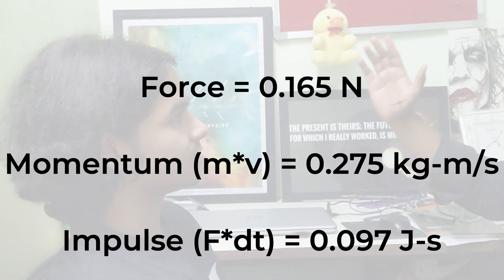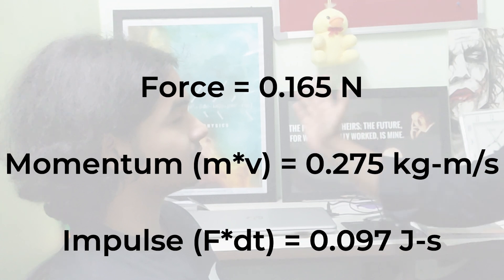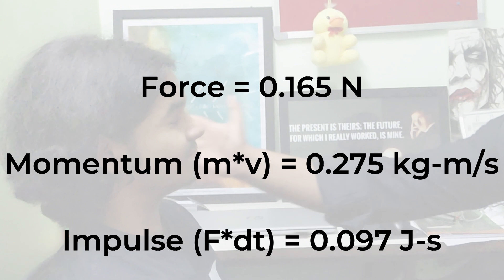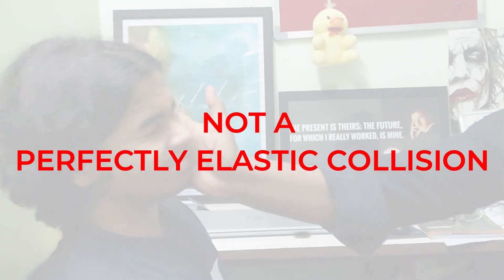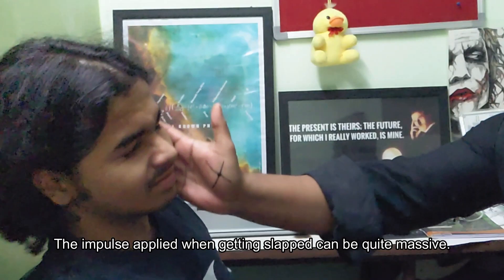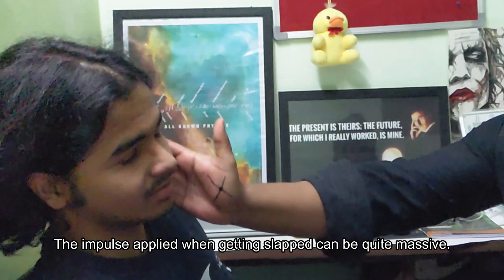Considering the average mass of the hand to be 0.5 kg, the momentum of the hand comes out to be 0.275 kg·m/s. Calculating impulse, it comes out to be 0.097 N·s. And remember, friends, this is not a perfectly elastic collision — the impulse applied when getting slapped can be quite massive.